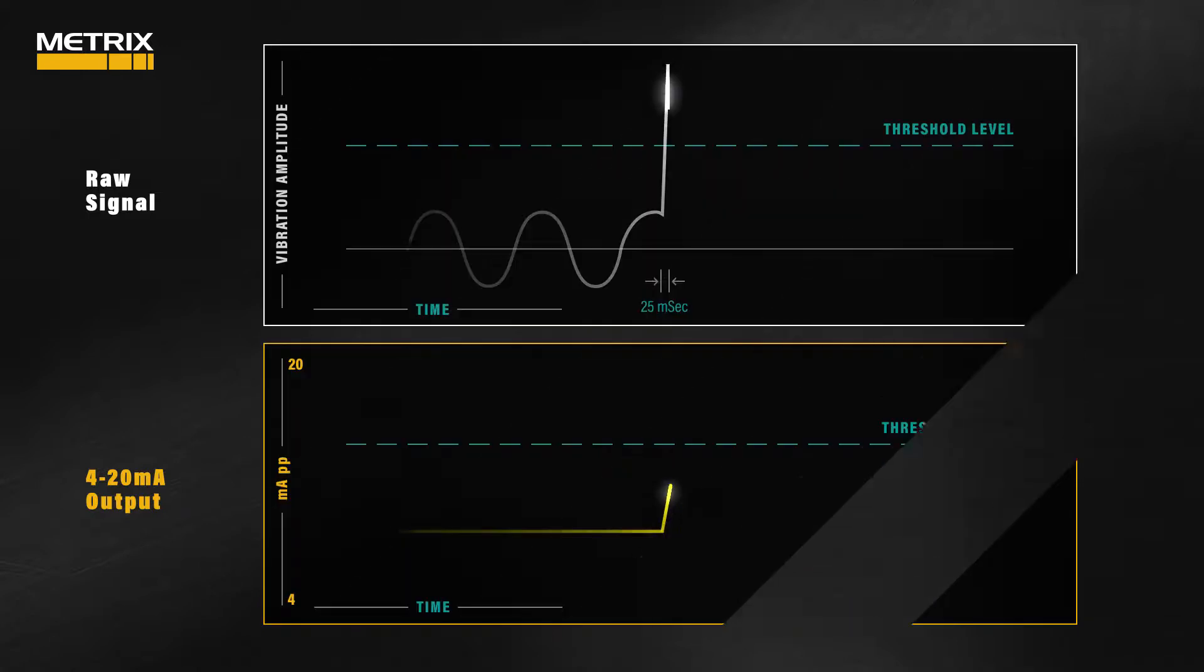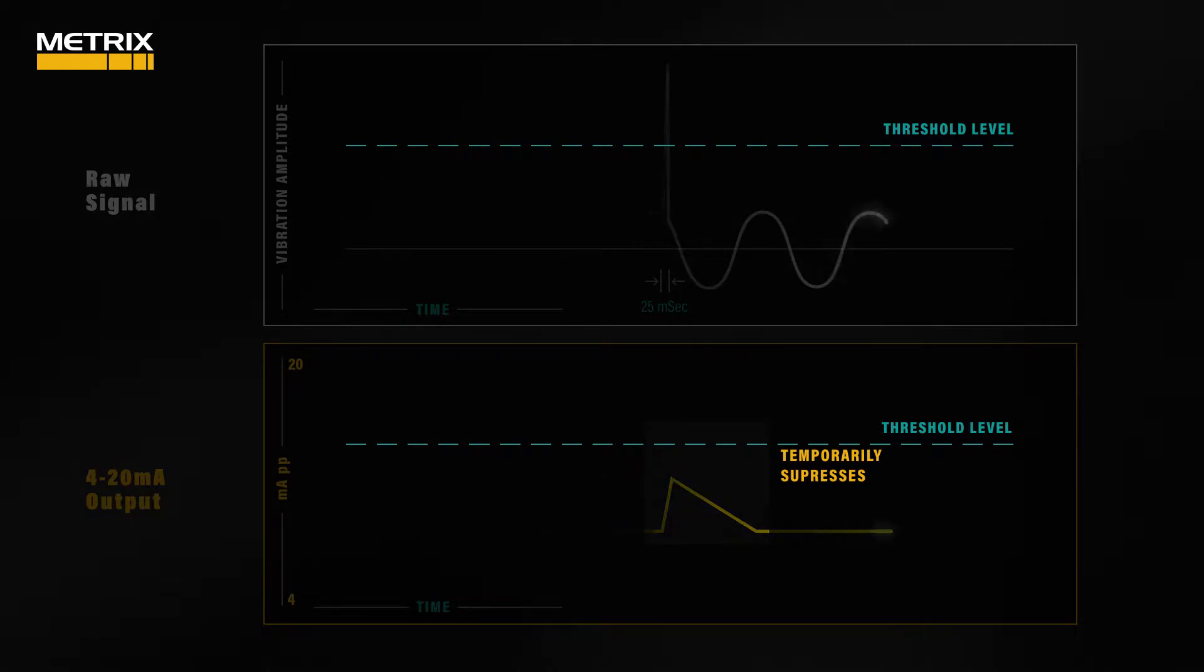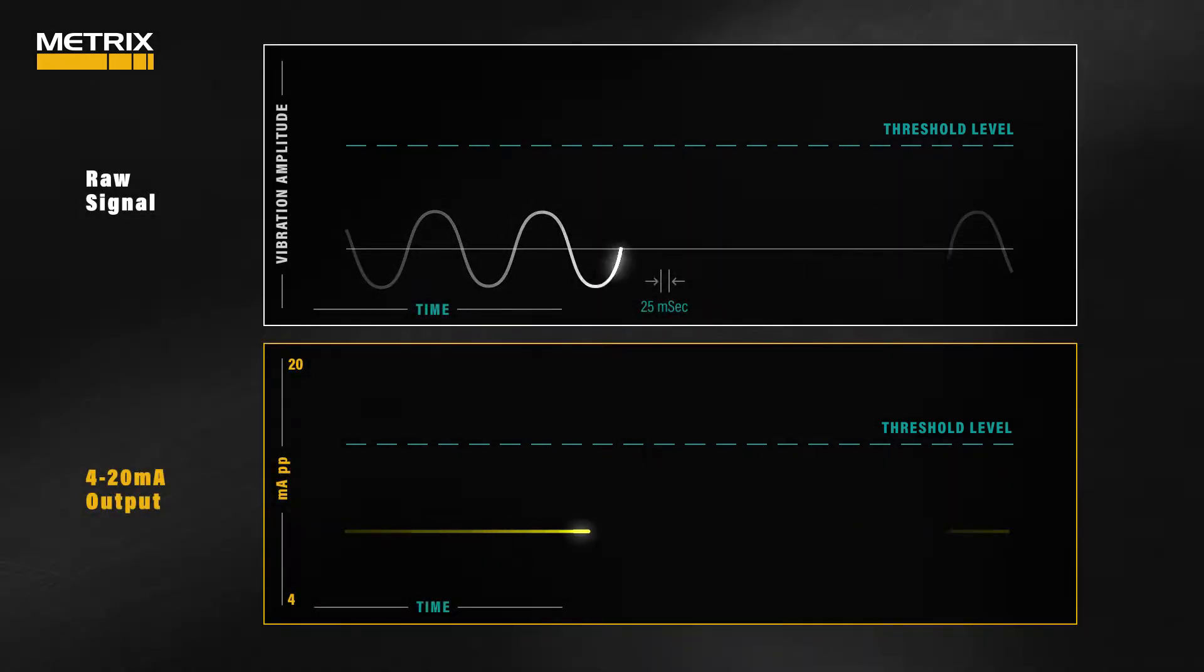or other electrical transients. This feature temporarily suppresses the 4 to 20 milliamp output during high amplitude short duration single polarity vibration spikes to prevent spurious alarms and false shutdown signals.